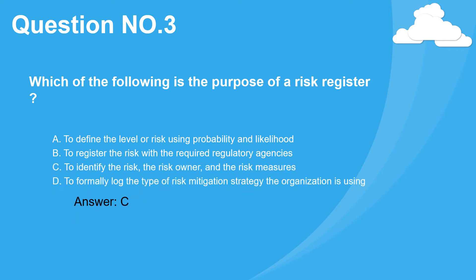Question number three. Which of the following is the purpose of a risk register? A. To define the level of risk using probability and likelihood. B. To register the risk with the required regulatory agencies. C. To identify the risk, the risk owner, and the risk measures. D. To formally log the type of risk mitigation strategy the organization is using. Answer: C.